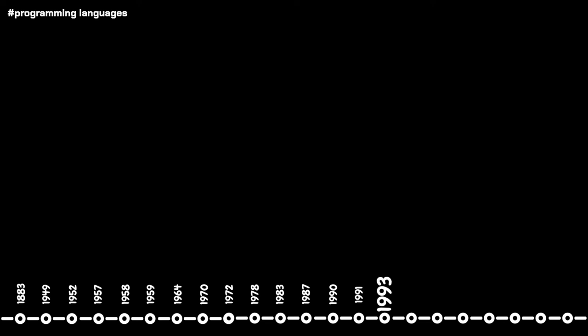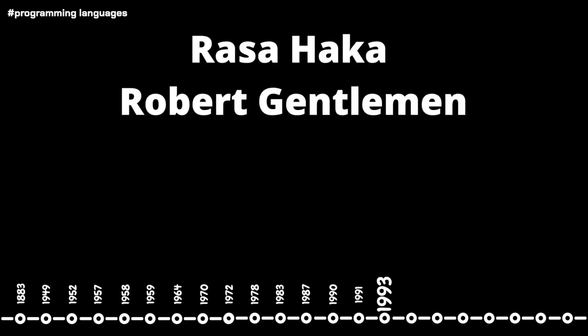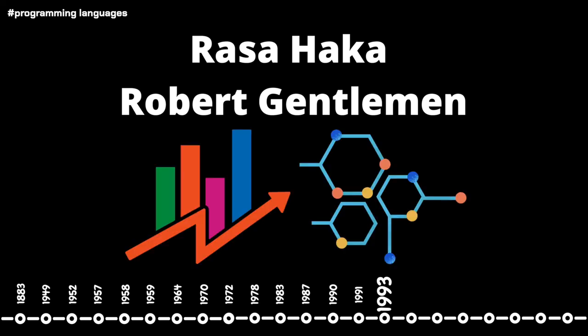In 1993, the programming language R was created at the University of Auckland, New Zealand. Ross Ihaka and Robert Gentleman developed R. R is mostly used among statisticians and data scientists for data analysis and development of statistical software. As of October 2022, R ranks 16th in terms of the most popular programming languages.